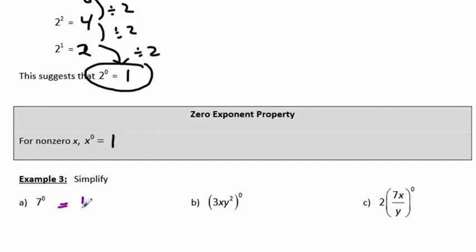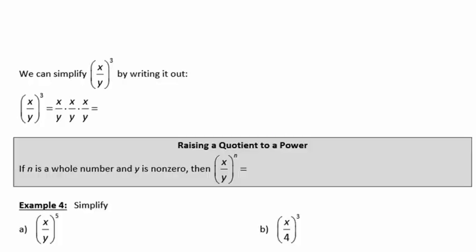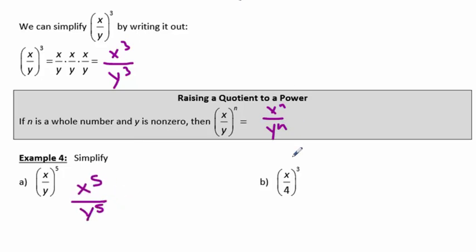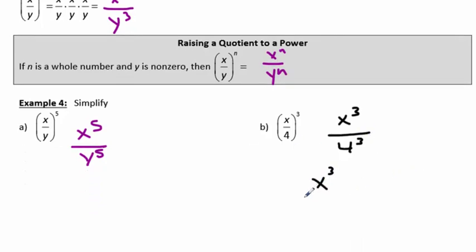So 7 to the 0 power is 1. 3xy squared to the 0 power is 1. And 2 times 7x over y to the 0 power is 2 times 1, or 2. Here's another property: if you have x over y to the 3rd, that's x over y times x over y times x over y, or x cubed over y cubed. So if you have a quotient raised to a power, you can simplify that as x to the n over y to the n. In example A we have x to the 5th over y to the 5th, and in example B we have x to the 3rd over 4 to the 3rd, or since 4 to the 3rd is 64, x to the 3rd over 64.